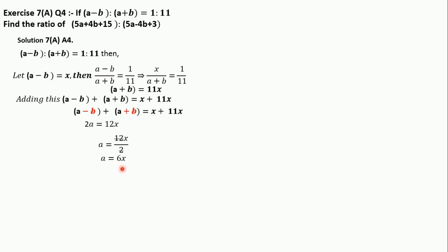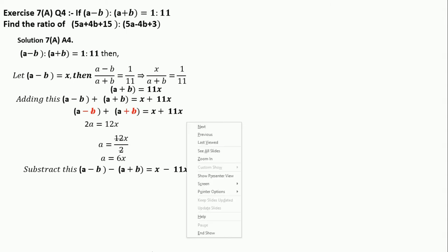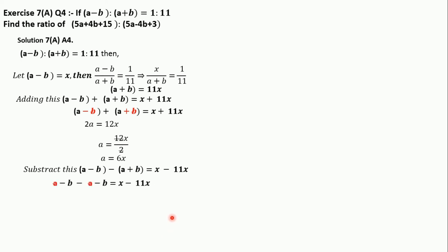Now to find 'b', we subtract the equations: (a − b) − (a + b) = x − 11x. The 'a' terms cancel, leaving −2b = −10x. Solving gives b = 10x / 2 = 5x. After addition and subtraction, we have both values: a = 6x and b = 5x.